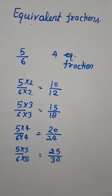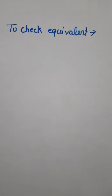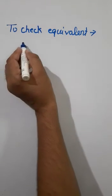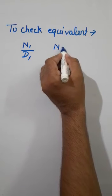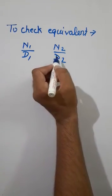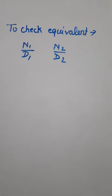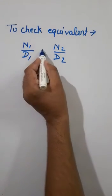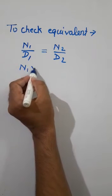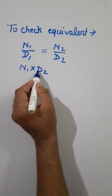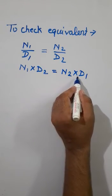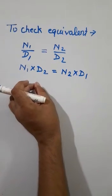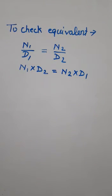Now let us understand how to check whether two given fractions are equivalent or not. Suppose two fractions are given: n1/d1 and n2/d2. To check equivalence, we cross-multiply: n1 × d2 should equal n2 × d1. If both products are equal, then the fractions are equivalent.